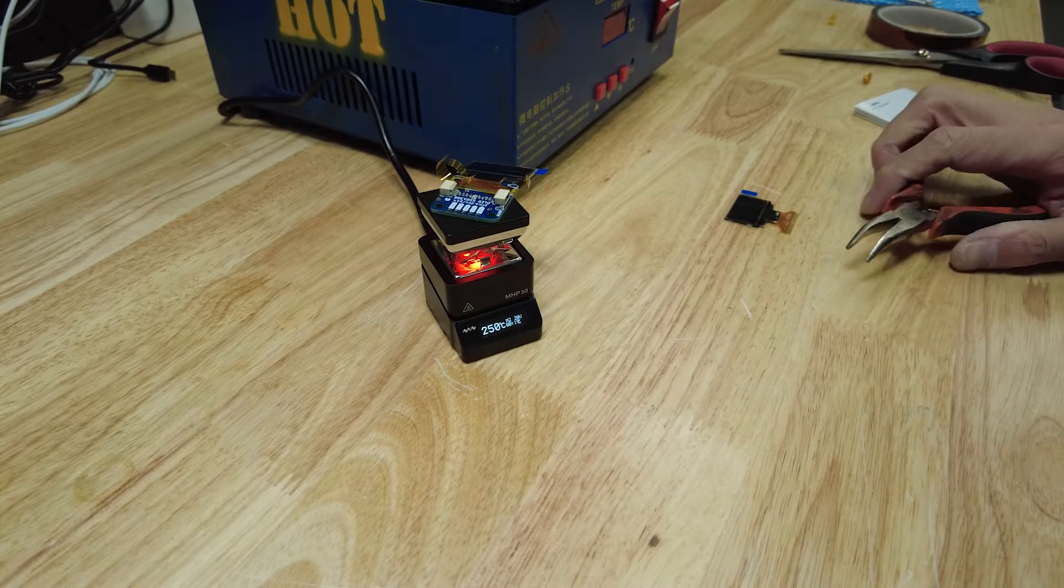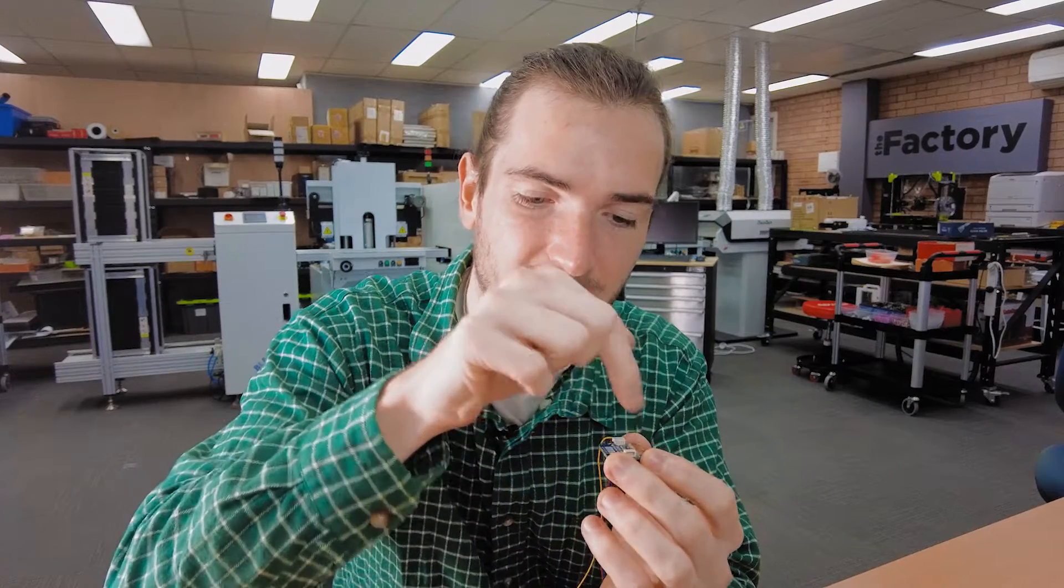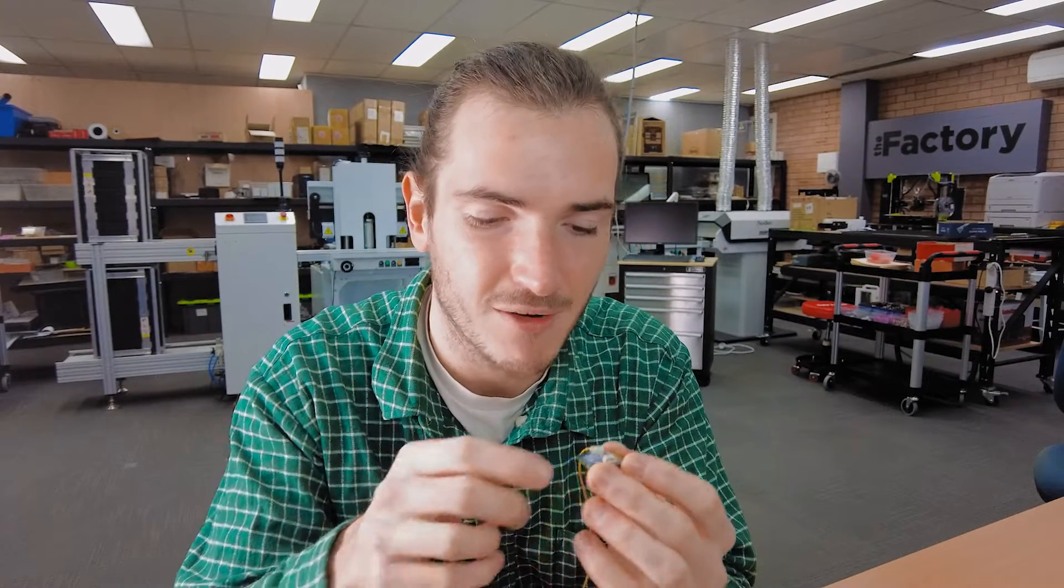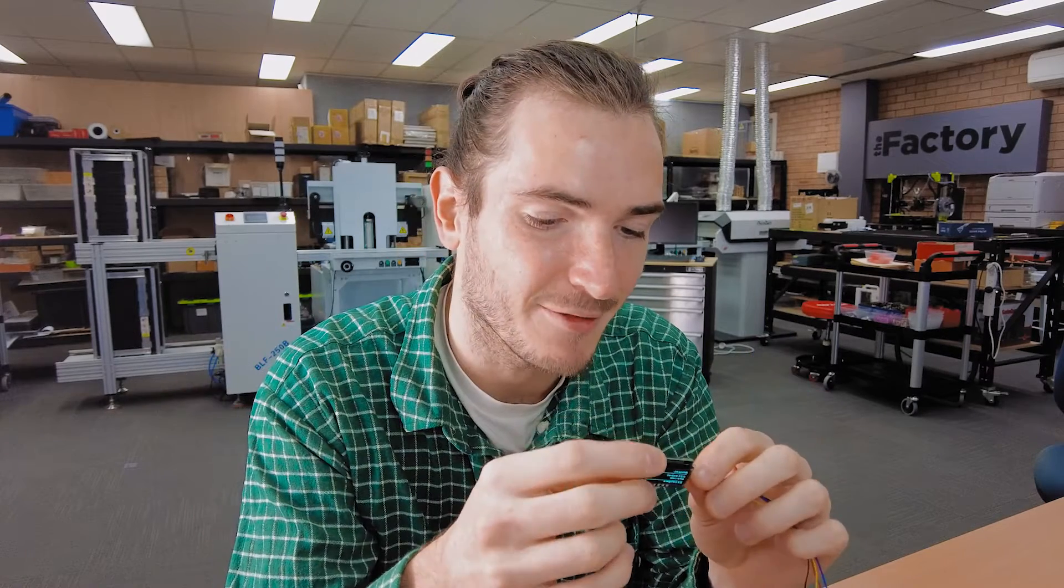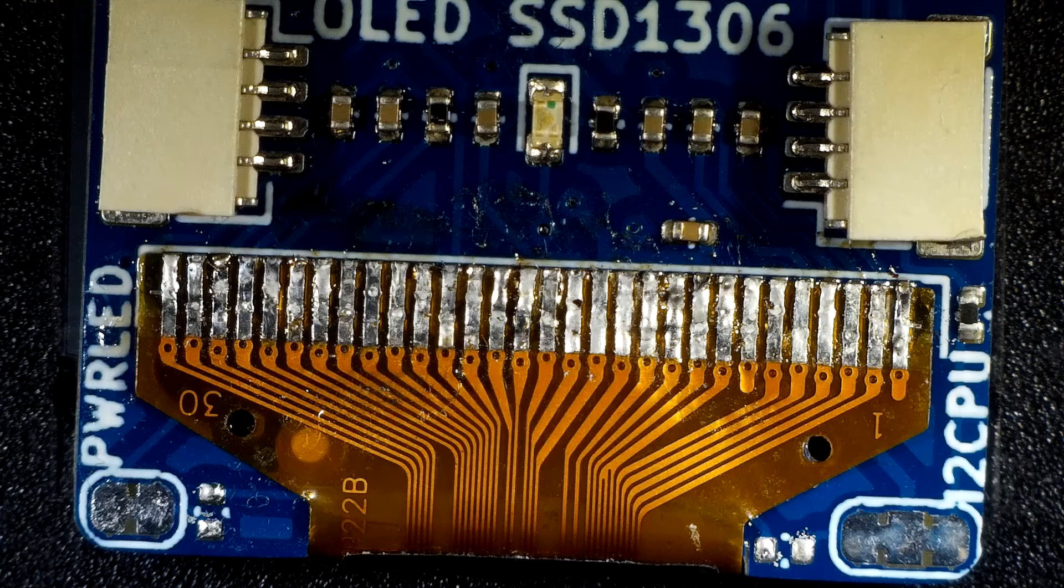We'll assemble this board just like any other that we do. We'll panelize it, send it through the pick and place machine and place all these parts and send it through the reflow oven. That's without the OLED module. These definitely can't handle the heat of a reflow oven so these will have to be put on after the fact. We've got a few ideas for that.